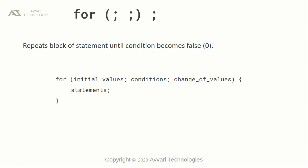Loops repeat a block of statements until the condition becomes false or zero. The syntax to write a for statement is as follows. We have three compartments in the for statement: the first one is initial values where we type in the initial values for the for block, and then we will check the condition.